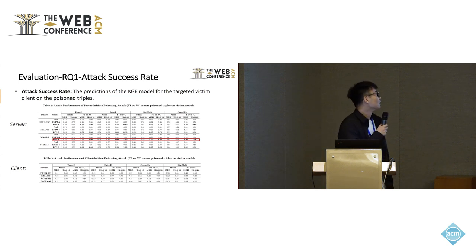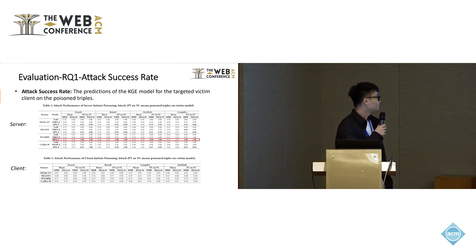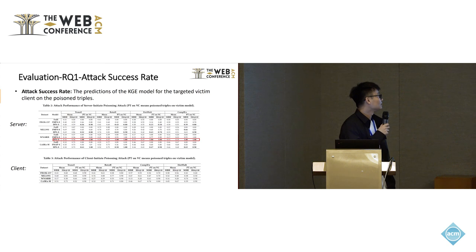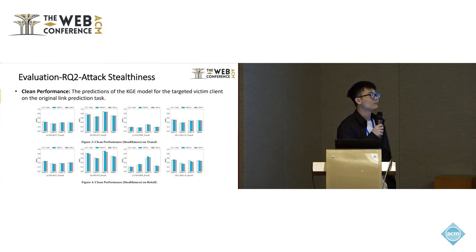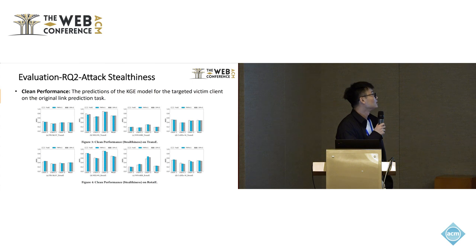We first tested the attack success rate when a server or a client is the attacker. Table 2 shows the performance of the server-initiated poison attack. We can see that MRR and HitN are zero on the clean model and become very high on the poison model. On the WN dataset, our dynamic poison attack achieves 100% attack success rate. When a client is the attacker, MRR and HitN also become very high on the poison model. For attack stealthiness, the clean performance on the clean model and the poison models are the same, demonstrating good attack stealthiness.